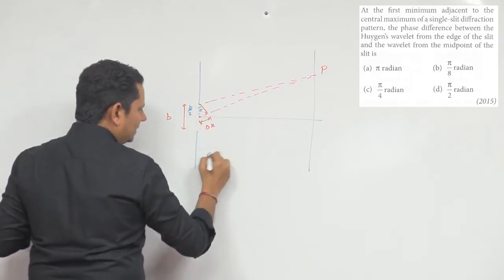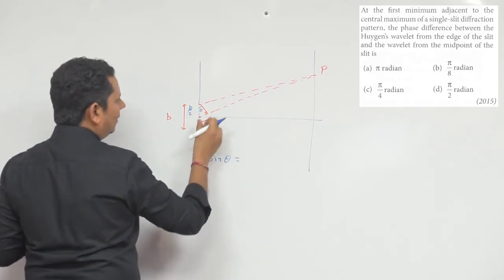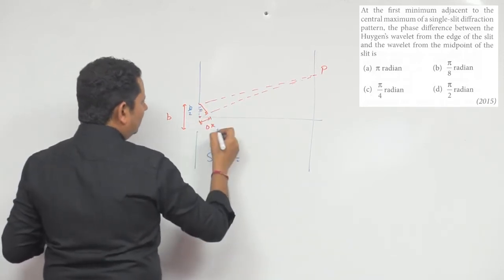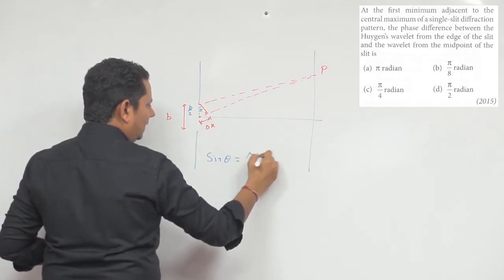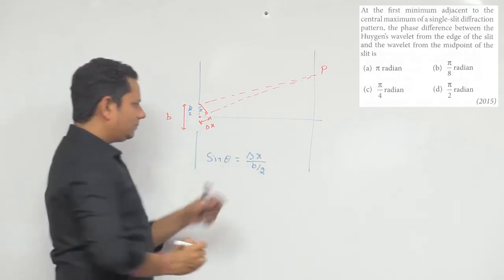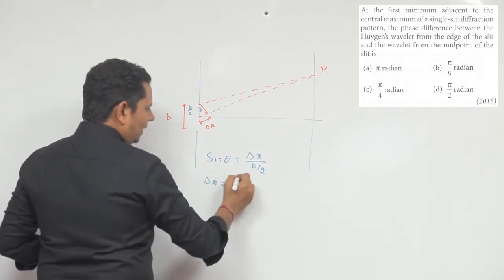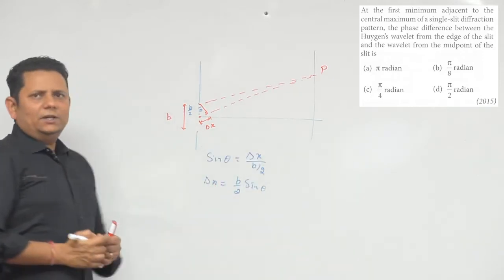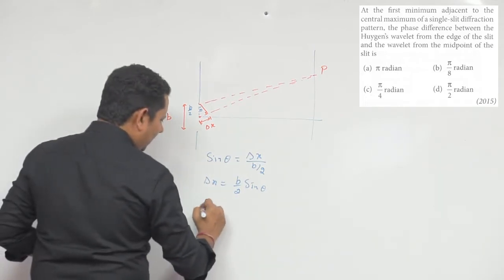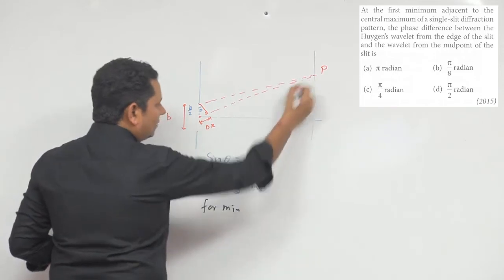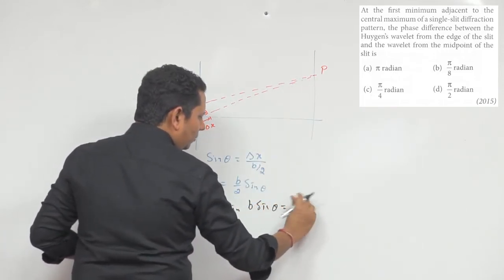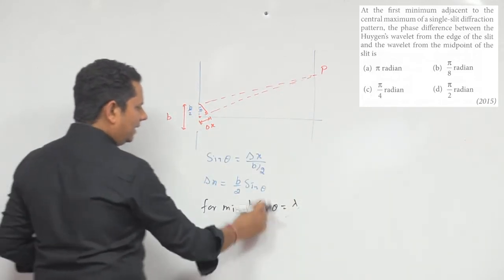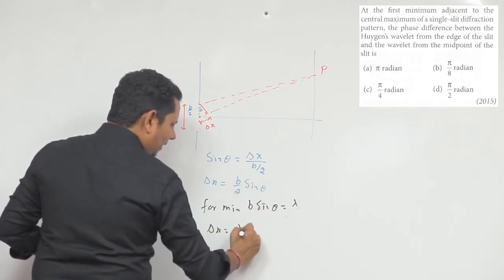In this case, we can say that sin theta will be equal to delta x divided by b by 2, so you have path difference. Therefore delta x will be equal to b by 2 sin theta. For the first minimum, sin theta equals lambda over b, so delta x equals b by 2 times lambda over b, which gives lambda by 2.